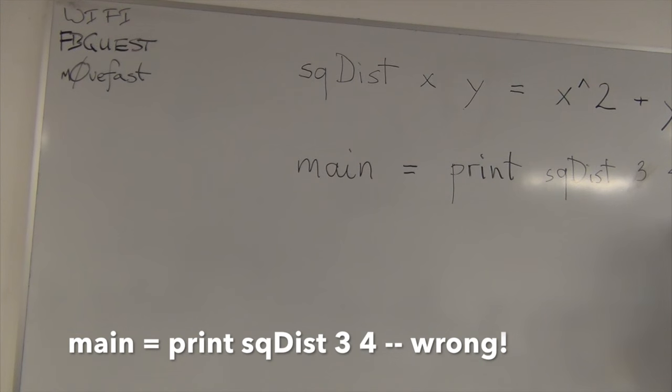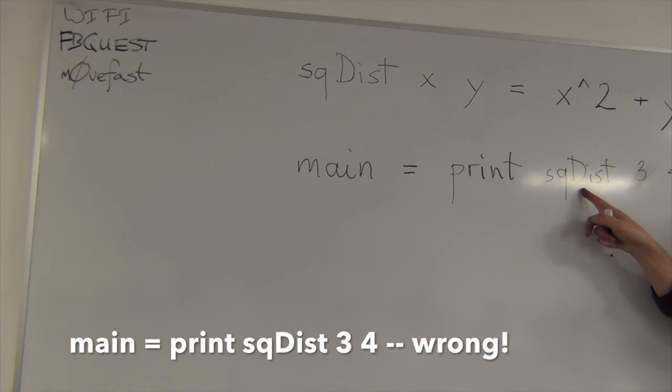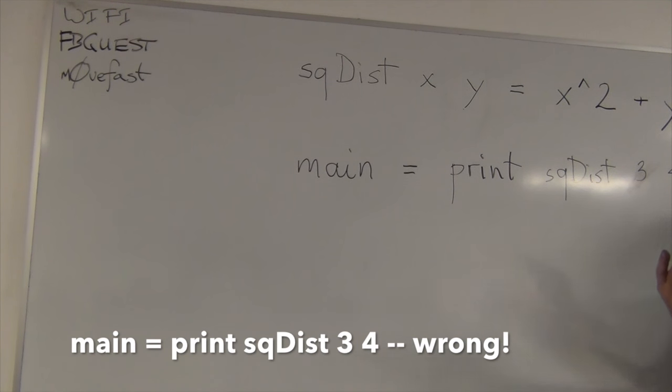So, if I wrote here, naively, sq dist, say, 3, 4, how would you parse it? I told you how to parse things that have spaces. Right. So, print is a function that takes three arguments. Yes. One of which is a function. One of which is a function. Okay?